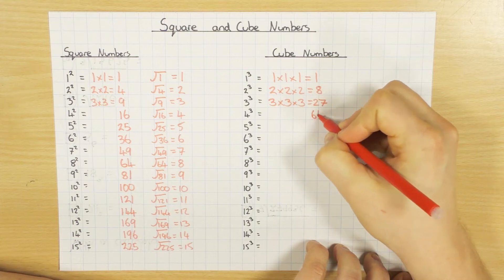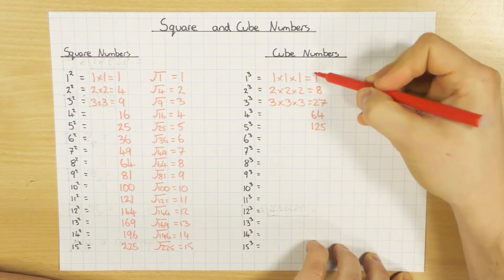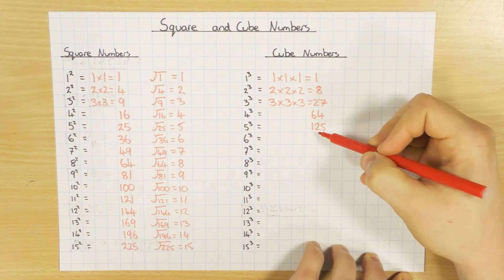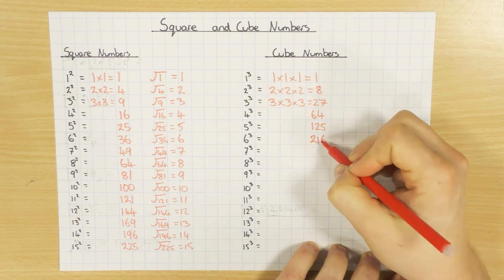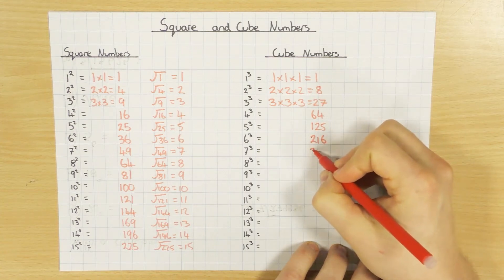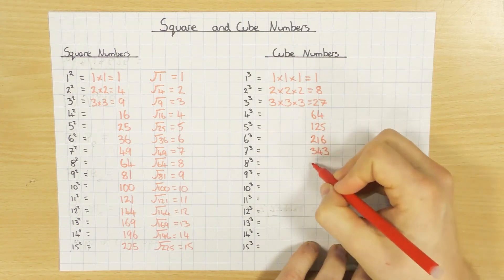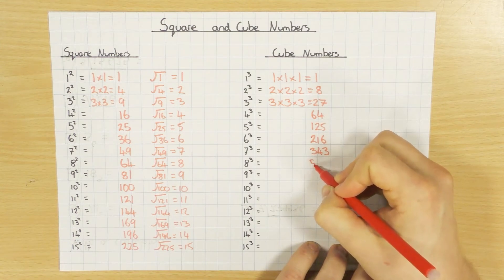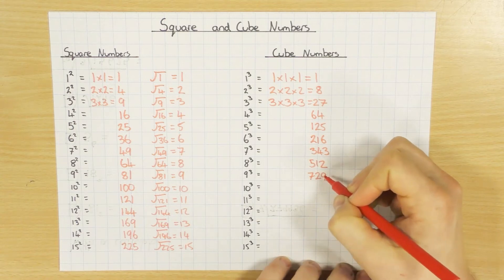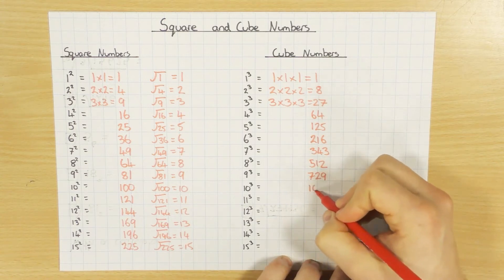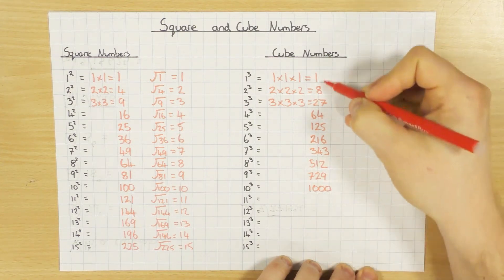And so on and so forth. So 4 cubed, 64. 5 cubed, 125. They tend to be the more common ones that you need to be able to remember. I will continue: 6 cubed is 216. 7 cubed, 343. 8 cubed, 512. 9 cubed, 729. Obviously, 10 cubed would be 10 times 10 times 10, which is 1,000. So again, that's one that you should know along with the first five.